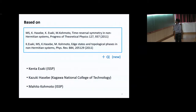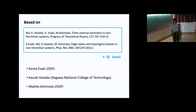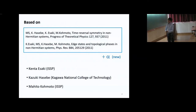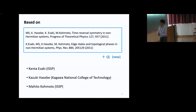I'd also like to try to add something new. These are the collaborators. This paper was written when I was at the ISSP, University of Tokyo. Kenta Esaki was my former student there. Kazuki Asebe is a friend of mine who often visited ISSP. I also discussed with Mahito Komoto, my former boss at ISSP.